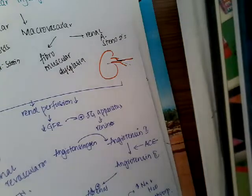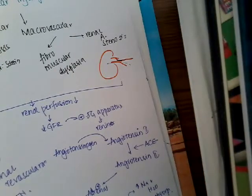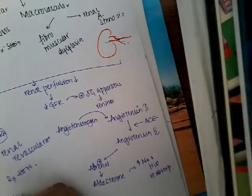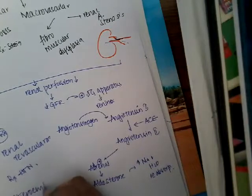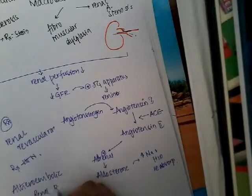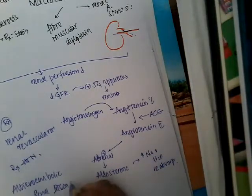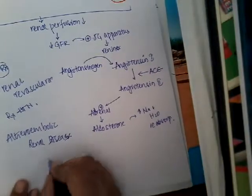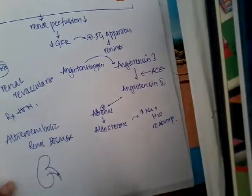This is about renal artery stenosis. The other thing which can occur is atheroembolic renal disease, where the thrombi or embolism will come and it will block the renal artery.